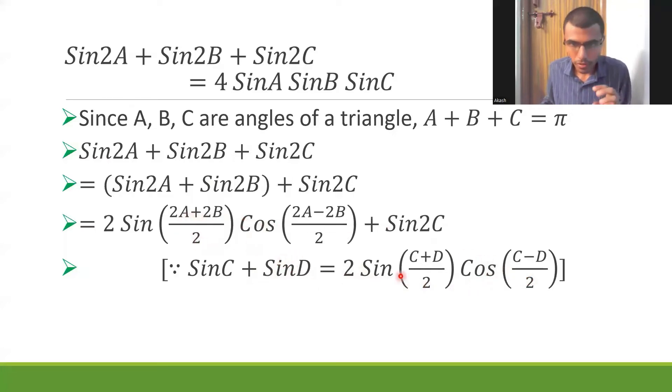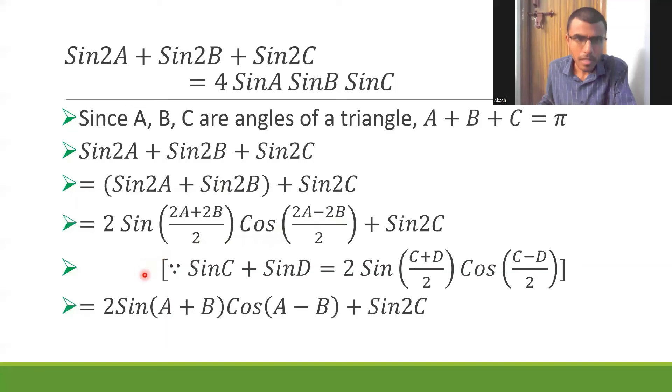Now in place of C and D there are 2A and 2B. If you observe, sin2A + sin2B is 2sin(2A+2B)/2 cos(2A-2B)/2 as per this formula. Now within this bracket, 2 would get cancelled, and here also 2 would get cancelled. I'd be left with 2sin(A+B)cos(A-B) + sin2C.